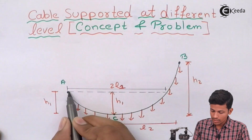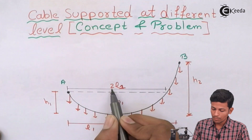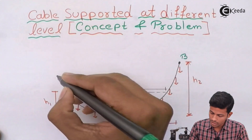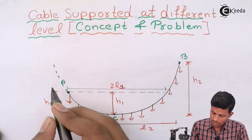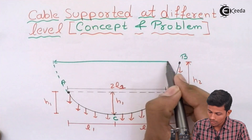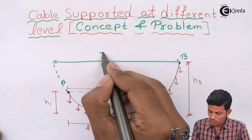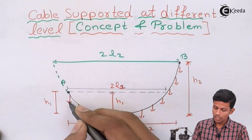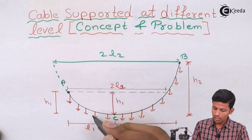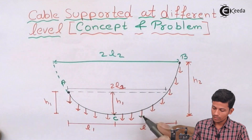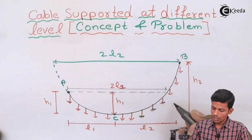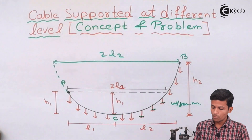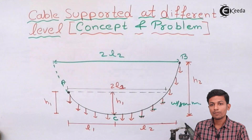Now let's see the distances. This distance will be 2 into L1. And this distance is nothing but 2 into L2. And this is the UDL — uniformly distributed load — over the entire cable, W per run meter.